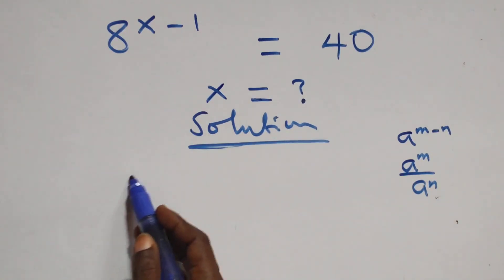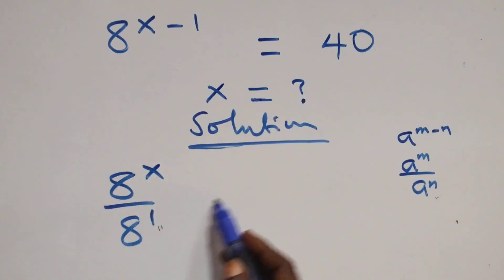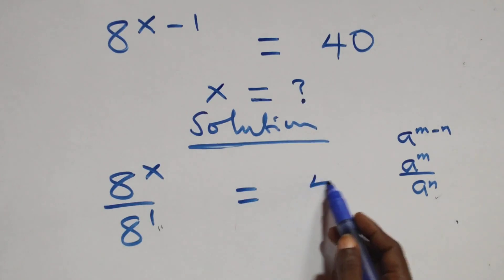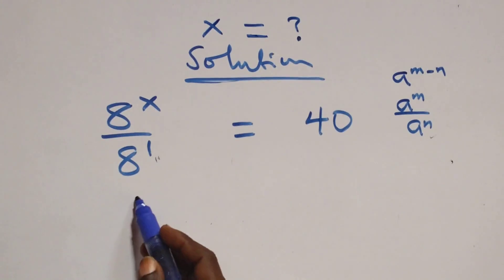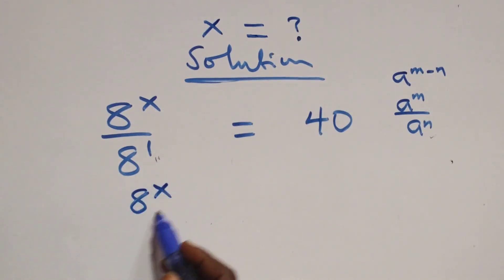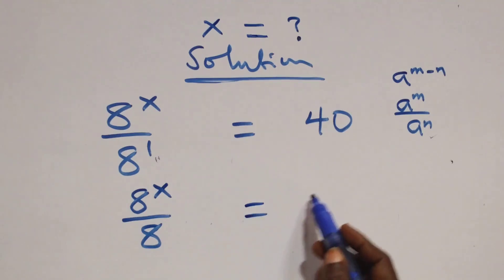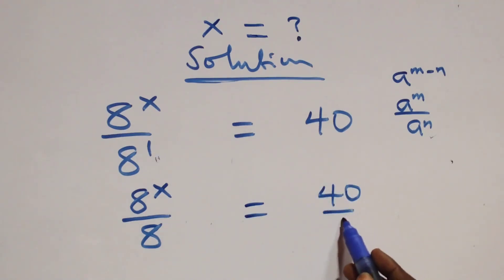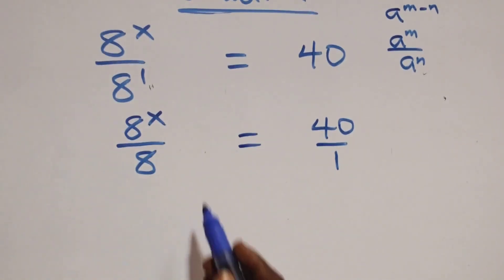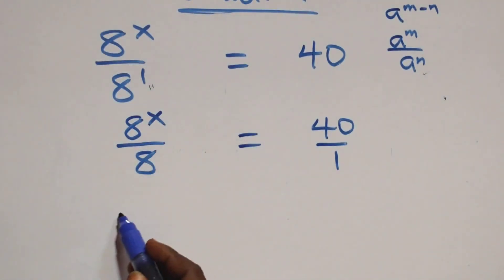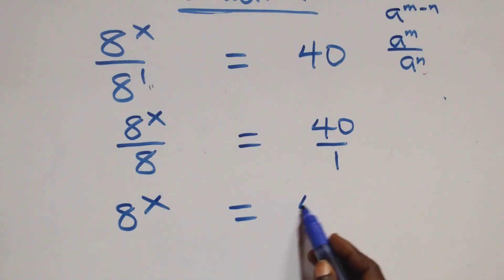Here we have a raised to power x over a raised to power 1 equals 40. We can write this as a raised to power x over a raised to power 1, that's 8, equals 40 over 1. The next step: cross multiply — a raised to power x times 1, same thing as a raised to power x, equals 40 times 8.